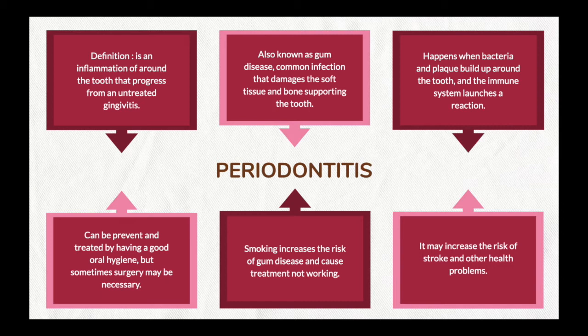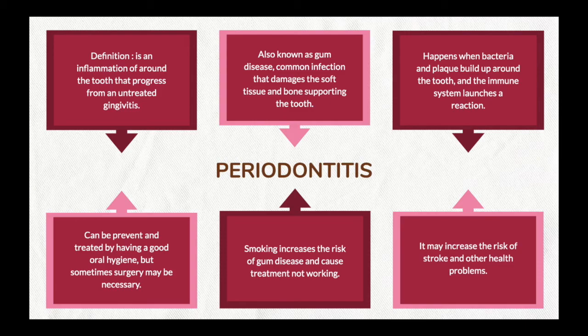Periodontitis is defined as inflammation around the tooth that progresses from untreated gingivitis. It is also known as gum disease — a common infection that damages the soft tissue and bone-supporting structures of the tooth. It occurs when bacteria and plaque build up around the tooth and the immune system launches a reaction. Periodontitis can be prevented and treated with good oral hygiene at the early stage, but in severe cases surgery may be necessary. Studies also show that smoking can increase the risk of gum disease and cause treatments to be less effective. This gum disease may also increase the risk of systemic disease such as stroke.